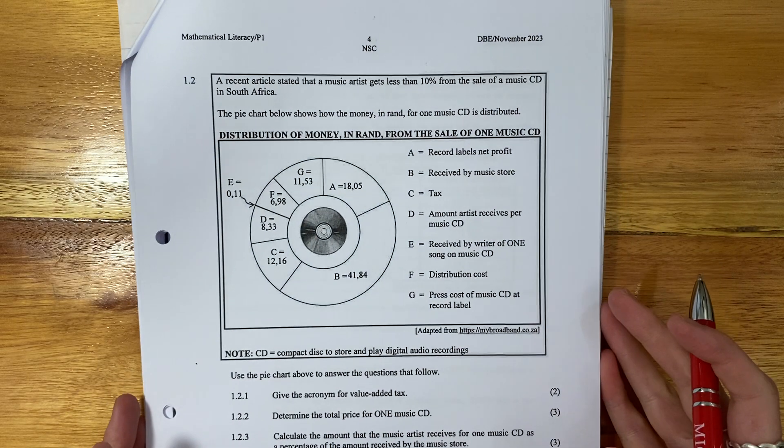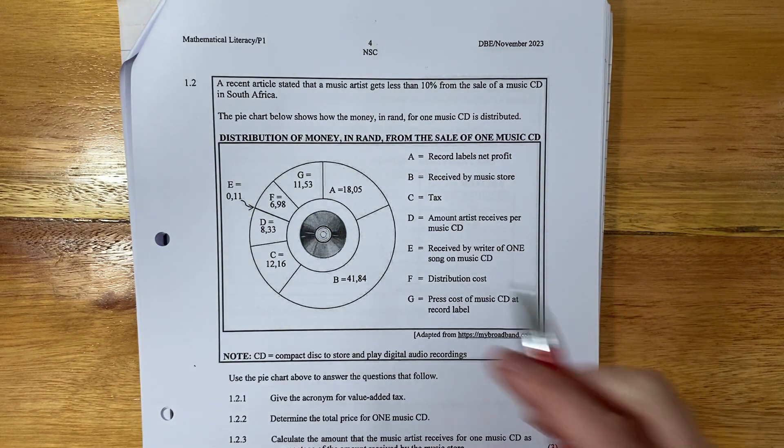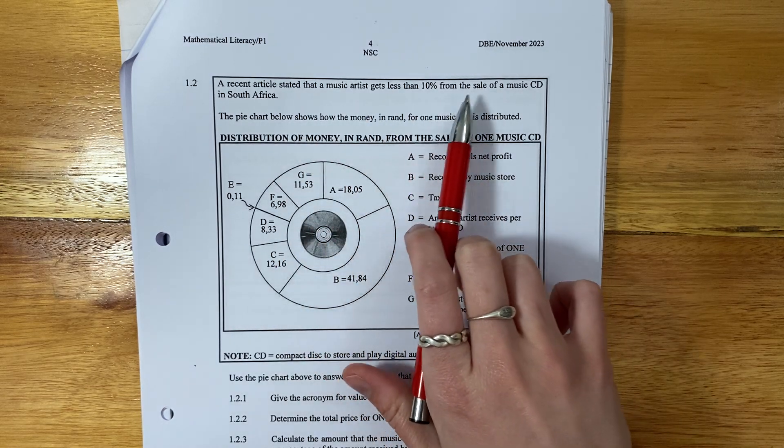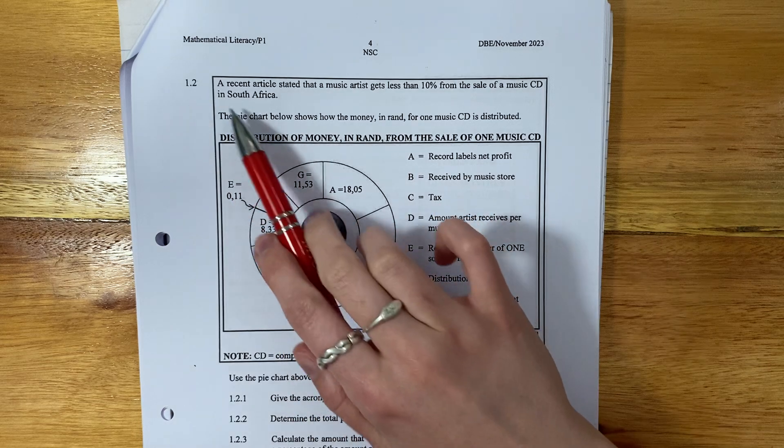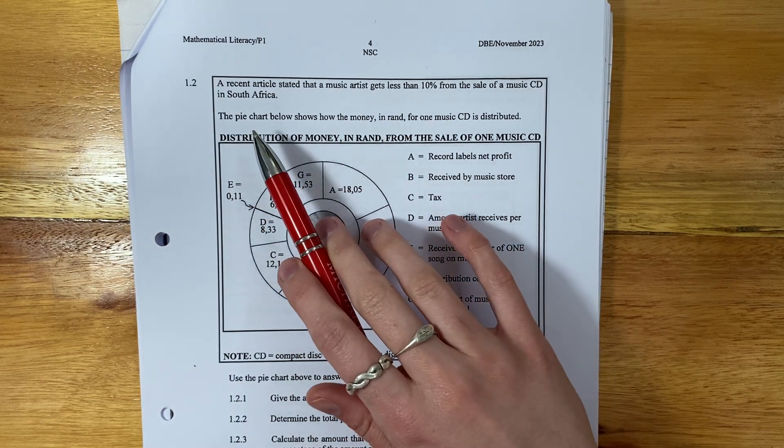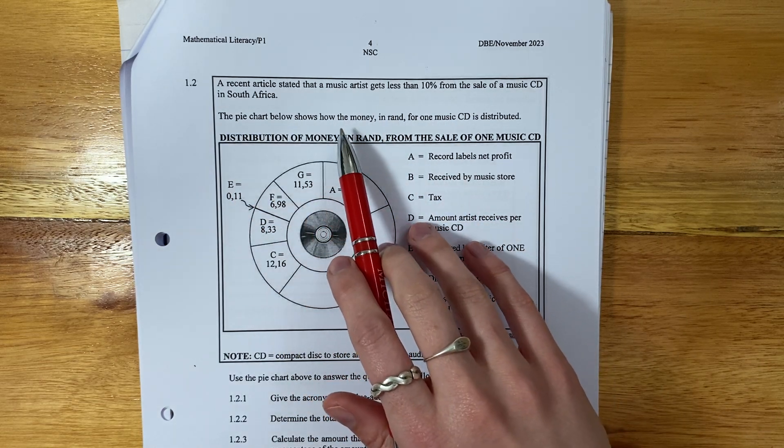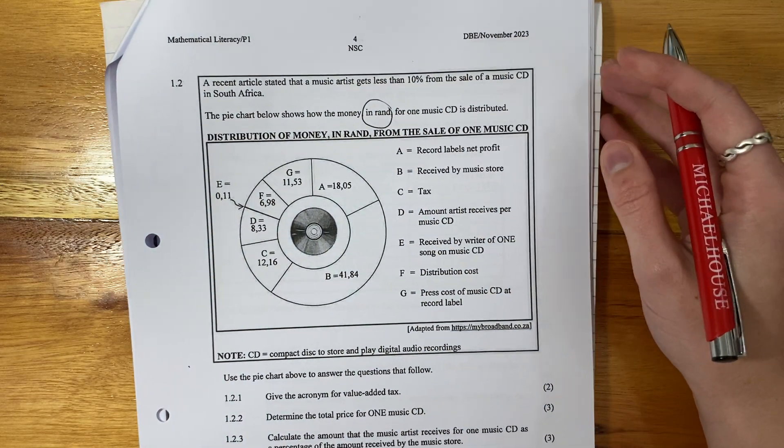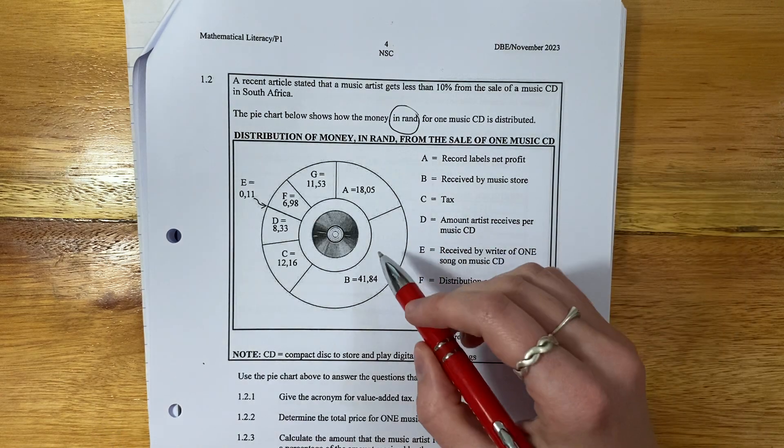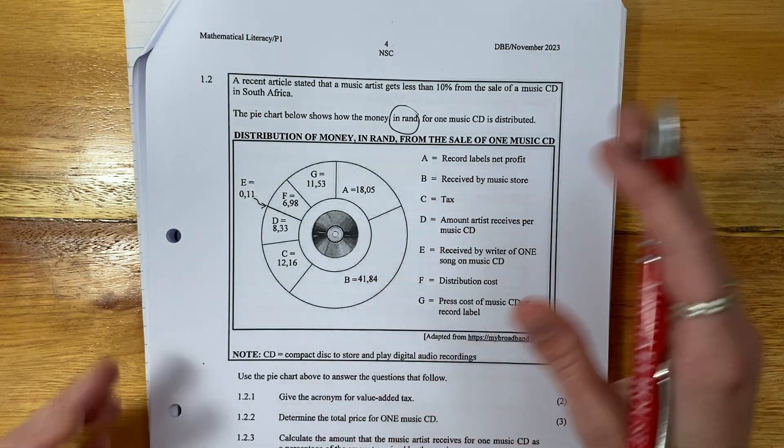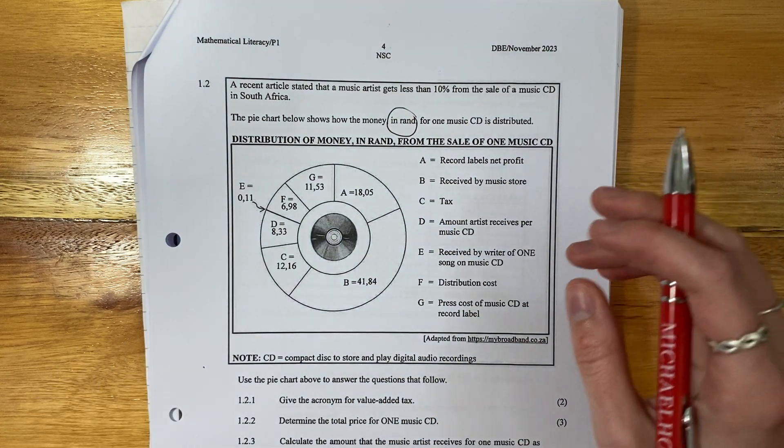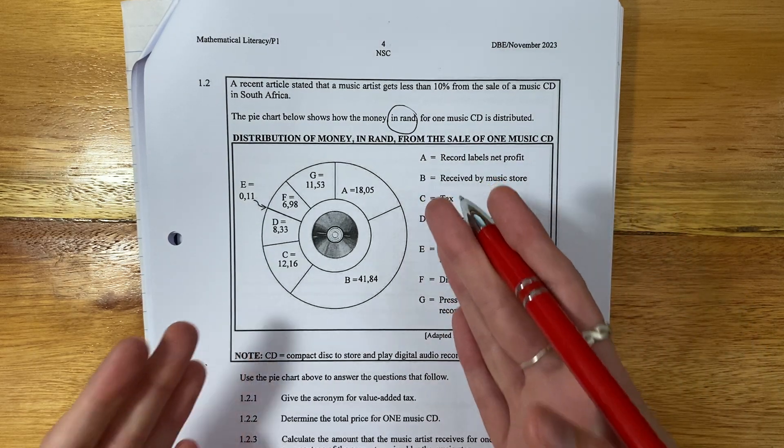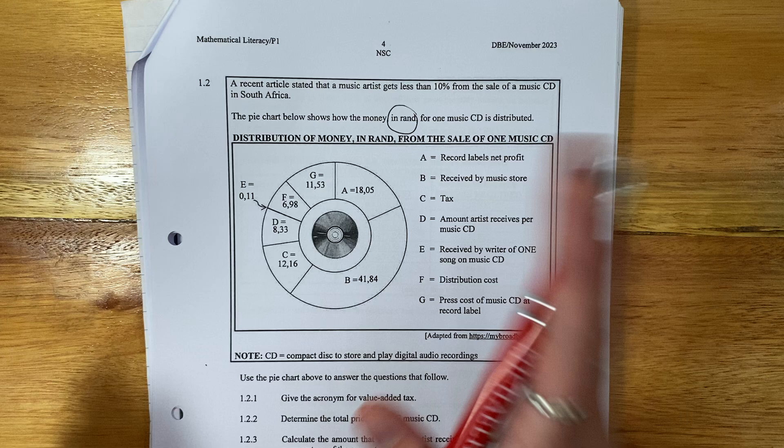Let's now move on to the next question. The next question says a recent article stated that a music artist gets 10% from the sale of a music CD in South Africa. It's not a lot, right? The pie chart shows how the money in rand for one music CD is distributed. Now, be careful. There's always this temptation when you see a pie chart to think it's percentages that add up to 100. That's not what it said - it's in rand, so it might not add up to 100. Be careful.